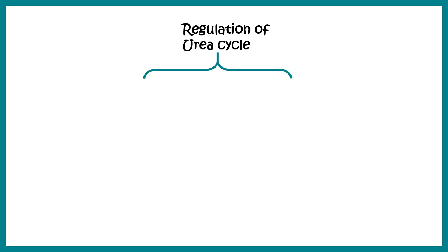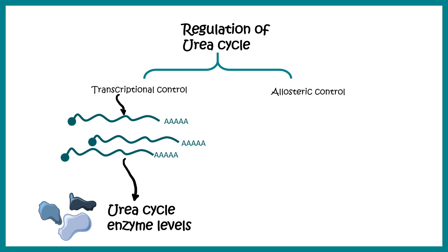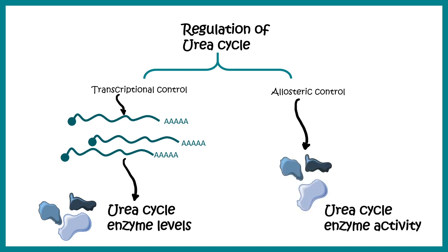Urea cycle regulation can occur broadly at two levels: transcriptional control and allosteric control. In transcriptional control, cells modulate how many transcripts of urea cycle enzymes are produced under certain metabolic circumstances. In allosteric regulation, the rate-limiting enzymes are modulated allosterically. The key difference is timescale — allosteric control is short-term, occurring in seconds to minutes, whereas transcriptional control occurs over minutes to hours.